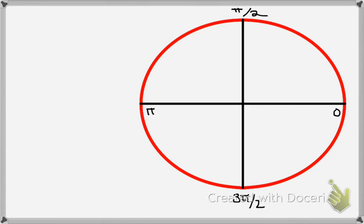Let's look at some basic angles on the unit circle. I've labeled here the angles 0, pi over 2, pi, and 3 pi over 2. I always use radians because radians are real numbers, but you could use degrees if you chose to. For the angle 0, the x-coordinate is 1 — because the distance from the origin to the circle is 1, the radius — and the y-coordinate is 0. So cosine of 0 equals 1 and sine of 0 equals 0.